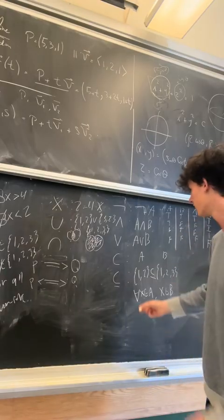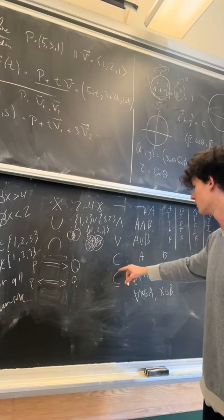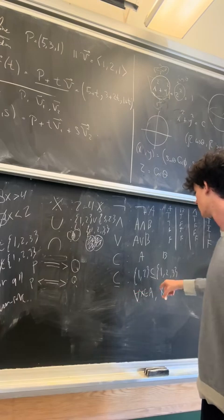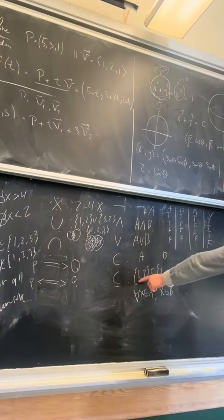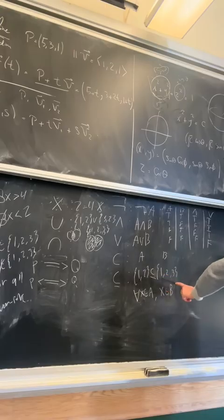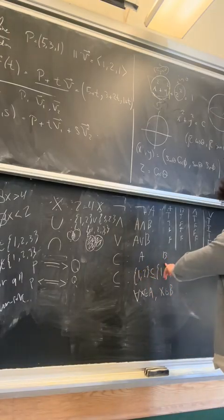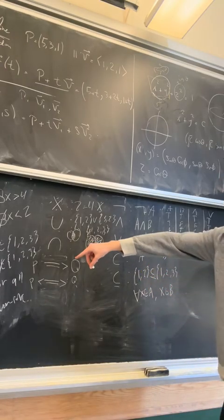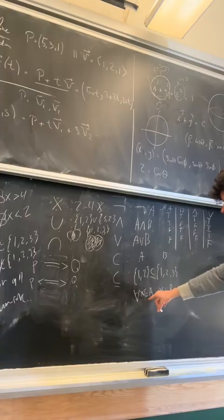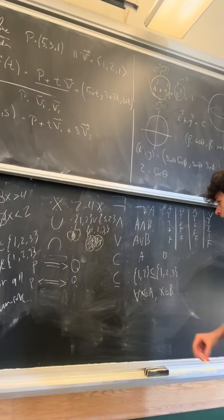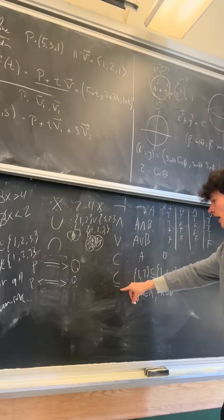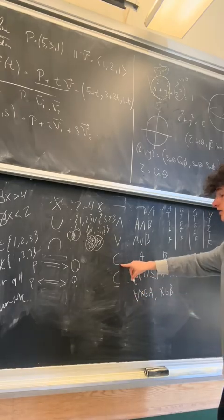And then the last thing we have here, this denotes a subset. So let's say we have the set {1,2}, the integers 1 and 2, and then we have the set {1,2,3}. You can say {1,2} is a subset of the set {1,2,3}, because every element of set A is an element of set B. So using the notation we wrote over there, for all X in A, X is also in B. And then this, so with the little line under it, this just means a subset, but this means a proper subset.